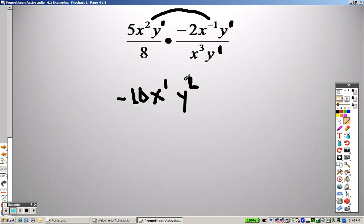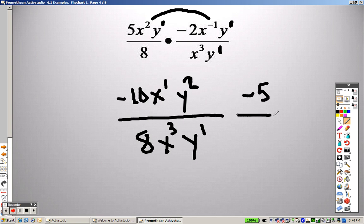y to the first and y to the first is y squared. So that's what's on top. Over 8, because there is no other number down there, x cubed and y to the first. Okay, so I can take a 2 out of both of those. So I end up with a negative 5 on top. And I end up with a 4 on the bottom.